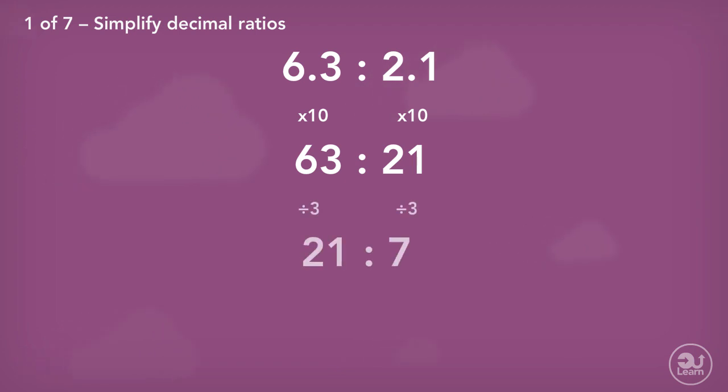Both values can be divided by 3, giving us the ratio 21 to 7. The new values can be further divided by 7. The final values can be divided only by 1, so the final answer is 3 to 1.